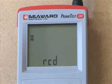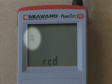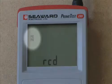If the mains supply is correct, both the PE and PN enunciators will be illuminated on the PrimeTest 220 display.